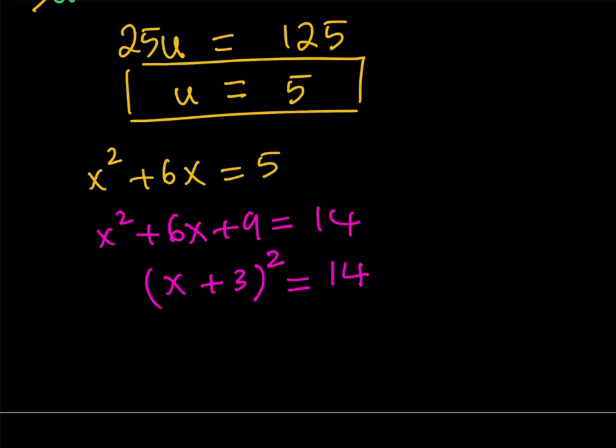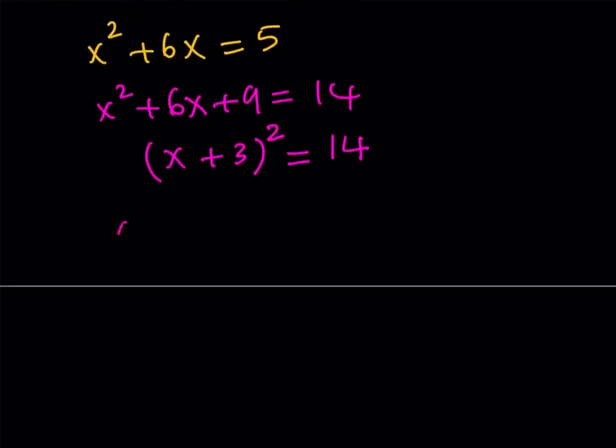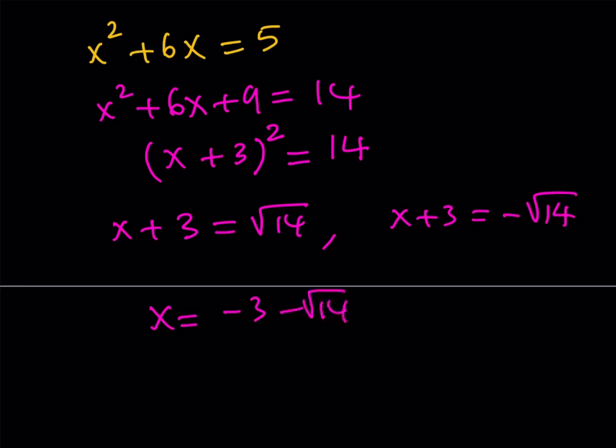And then what I'm going to do is I'm going to square root both sides and write two separate solutions. One of them is going to be the square root of 14. The other one is just going to be negative of that. And from here, obviously, if you subtract 3 from both sides, you're going to be getting two solutions. This one and that one.